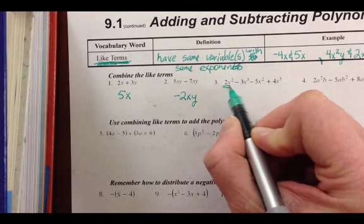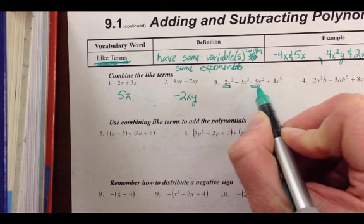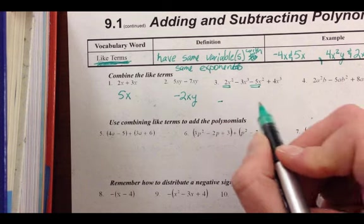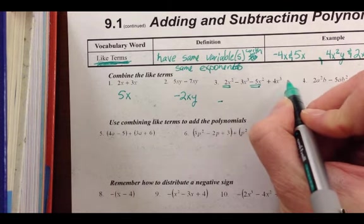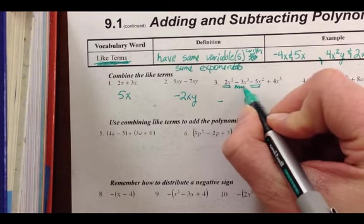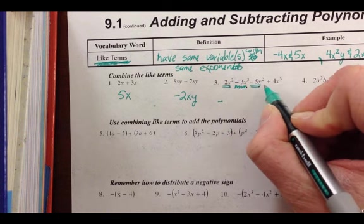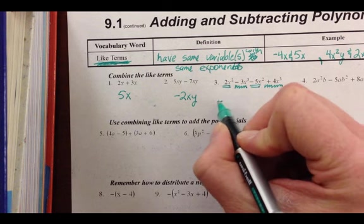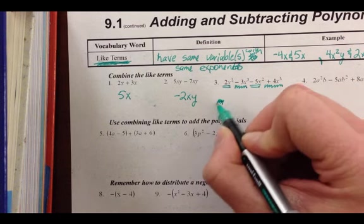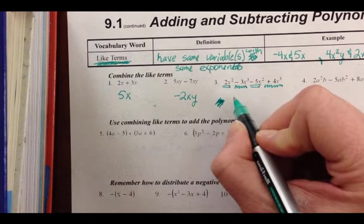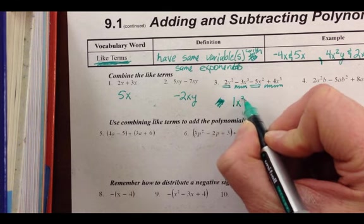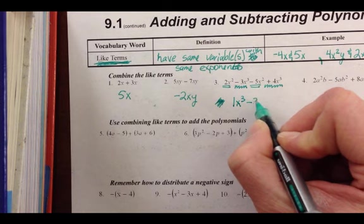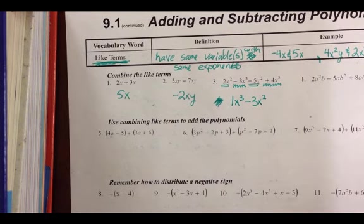I have an x squared. I have a negative 5x squared. That's all my x squareds. And we want to do descending powers of x. We'll save that one for a second, because these are thirds. x to the third power, negative 3x to the third, and a positive 4x to the third. So I have 1x to the third, or just x to the third. And I have a negative 3x squared. That's when I combine my like terms.